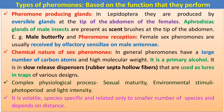In Lepidoptera, the sex pheromone producing and receiving systems are present. The sex pheromones are mostly evolved in Lepidoptera. In females, they are produced by eversible glands present on the tip of the abdomen. In males, the aphrodisiac glands produce a scent brush at the tip of the abdomen. Pheromone reception occurs via olfactory sensilla on the antenna of male insects.